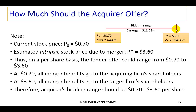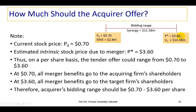If you pay an amount that exceeds $14.38 million, you are not doing your stockholders a favor. Any amount paid within the bidding range does create wealth for your stockholders theoretically, but even more importantly, it also creates a wealth gain for the stockholders of the target firm. At $0.70, all merger benefits go to the acquiring firm because you're paying far less than what you believe the firm is worth. At the top of the range, all merger benefits go to the target firm's shareholders.